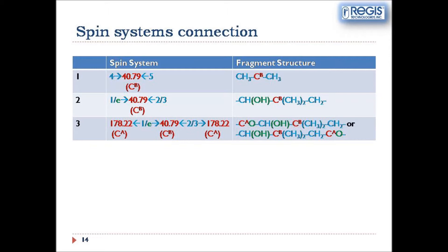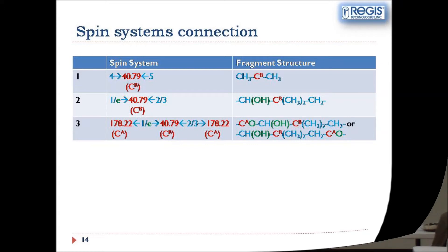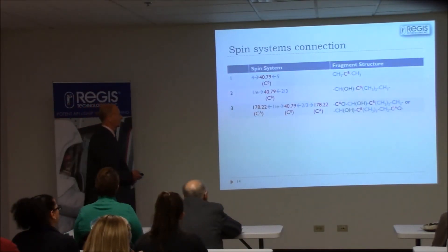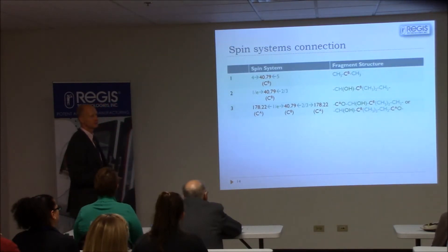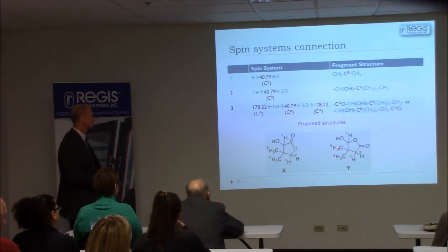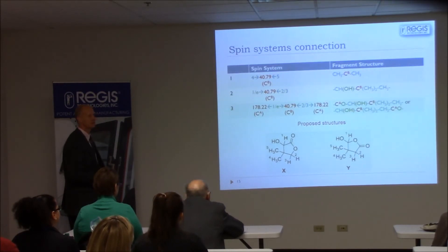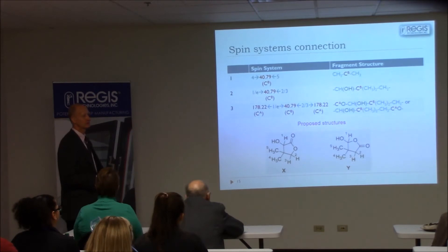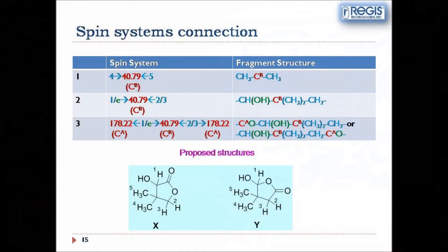We can also see that spin system two is connected to quaternary carbon C. After thinking through this, we can construct only two fragments which represent the structure. These fragments are open, but considering the molecular formula and the required degree of unsaturation, when we close those open structures we get two cyclic structures, X and Y. Both are chemically possible — very often this exercise produces structures that are not chemically reasonable and can be discarded, but in this case both structures look quite reasonable and both could be produced during the process.